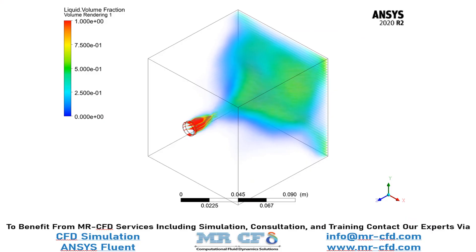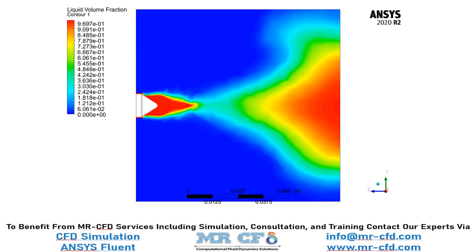In this 3D contour you can easily see how the liquid has been injected inside our computational domain and how it has spread inside of it. In this contour you can better see the liquid volume fraction distribution in the middle section of our geometry, and you can easily see the liquid volume fraction has decreased near the interface of the phases — air and liquid — as it has turned into vapor.